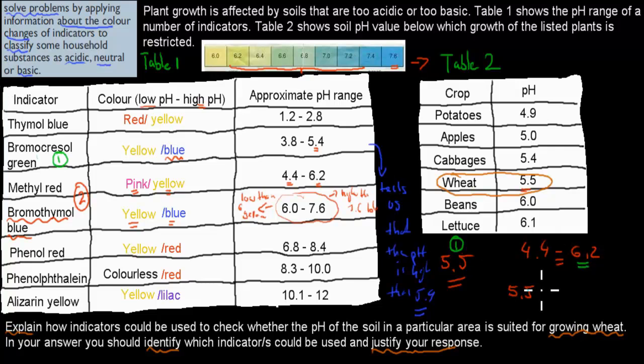So using those two indicators, we figured out that the pH range of that soil is somewhere between this area. We can't get it exactly to the pH, but it's going to be somewhere in that area. So for wheat, we need to have a pH of 5.5, and we know it's going to be somewhere in that area. We don't know exactly if it's going to be 5.5, but we know it's going to be somewhere in that area.